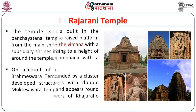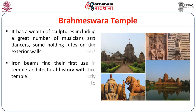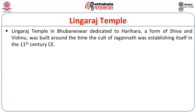On account of its later origin, the Brahmishwara temple is a perfectly developed structure when compared to the Mukteshwara temple. Here you will find all the elements — whether the Udayata Singhas or the Ghoda Chakkadas — fully developed. It has a wealth of sculptures, and iron beams were first used in this temple — making it the first temple in the entire country to have iron beams.